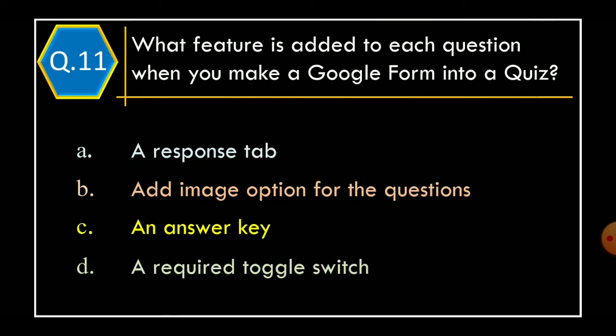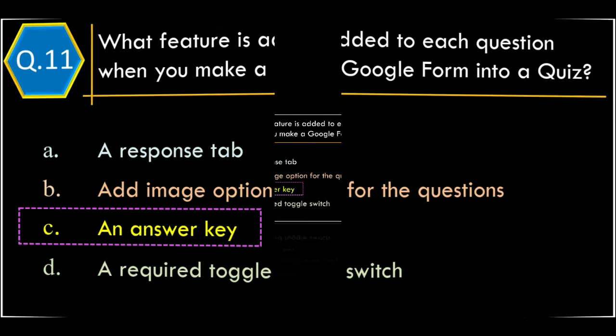Question 11. What feature is added to each question when you make a Google Form into a quiz? Option A, Response Tab; Option B, Add Image option for the questions; Option C, An Answer Key; Option D, A Required Toggle Switch. And the correct option is Option C, An Answer Key.